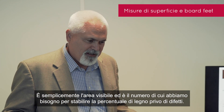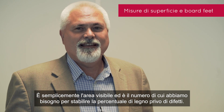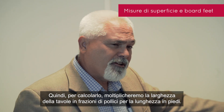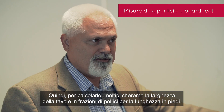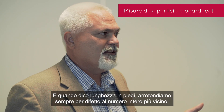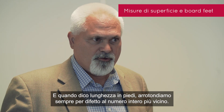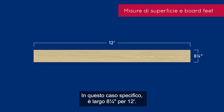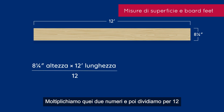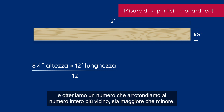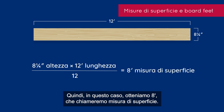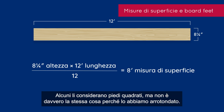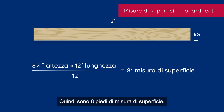Surface measure is simply the area you see, and it's the number we need to establish that percentage of clear wood — it's the base number we need. To calculate it, it's the width of the board in inches with fractions times the length in feet. We always round down to the nearest whole foot — we call them standard lengths. In this case, it's 8¼ inches wide by 12 feet. You multiply those two numbers, divide by 12, and round to the nearest whole number. In this case, it gives you 8 — what we call surface measure.